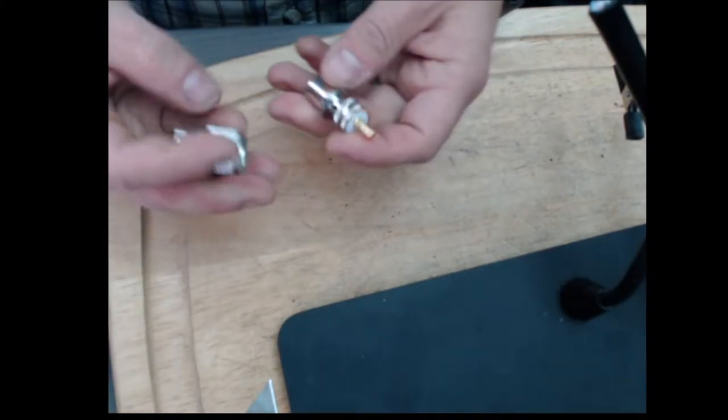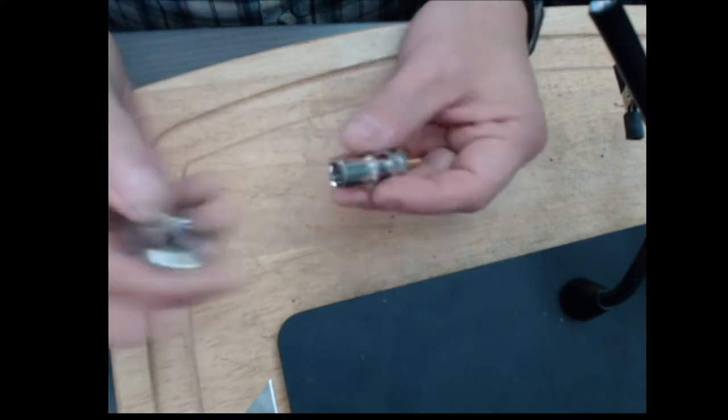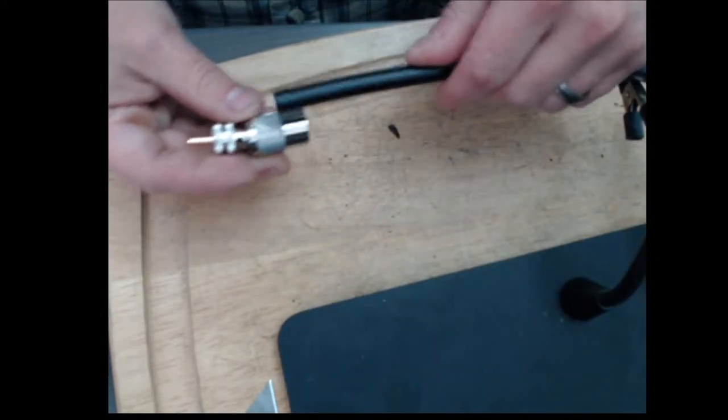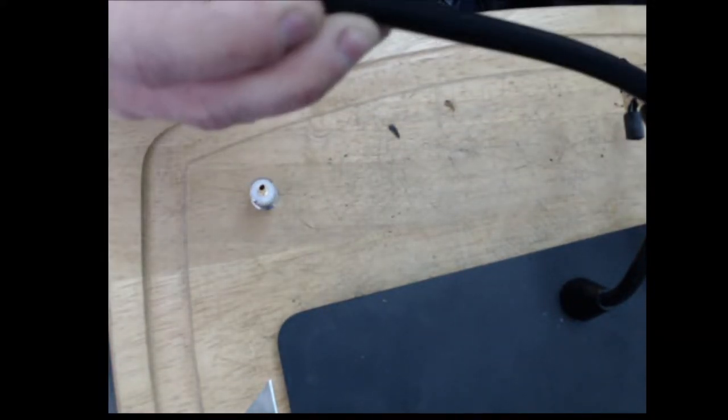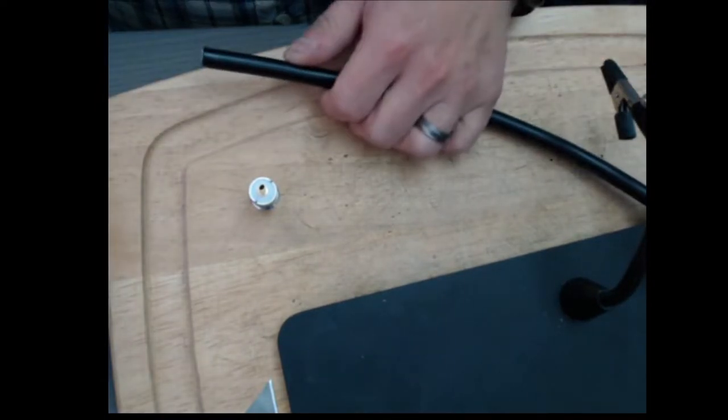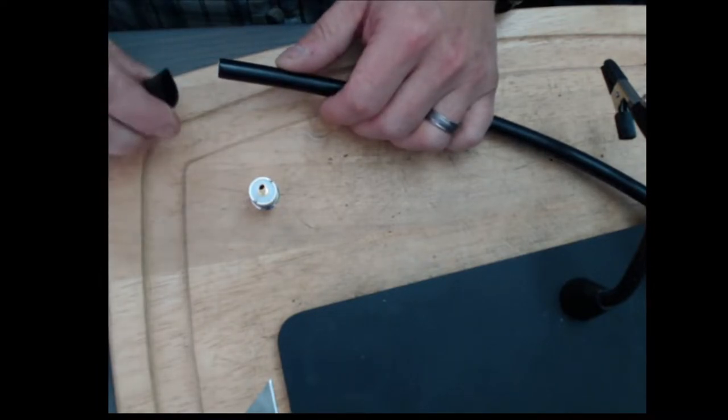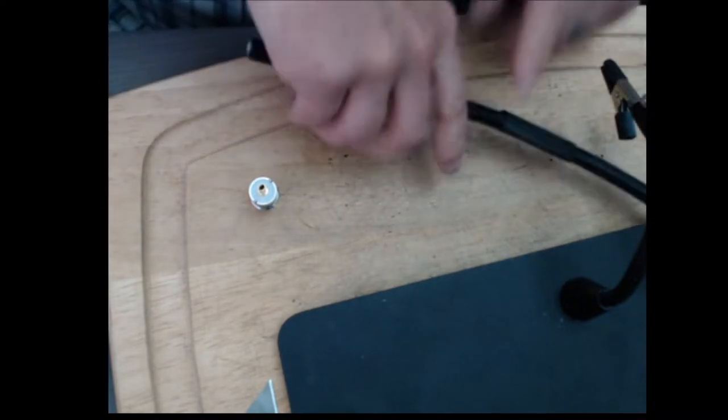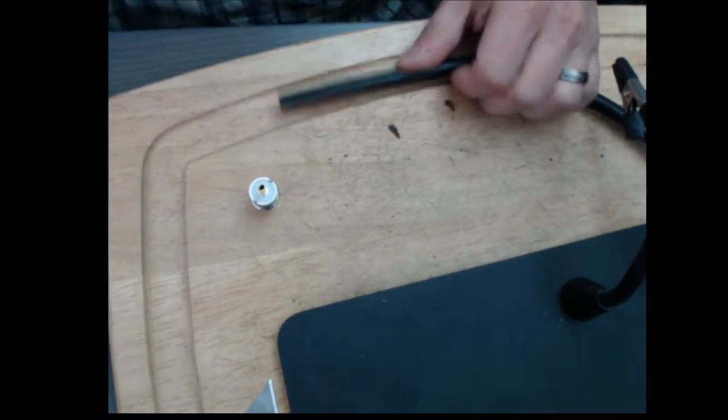So first thing you do is make sure you take your connector apart here. You're going to want to take this end - it can only screw on one way - so unscrew that and it's going to sit on the cable like this. So we need to make sure that we slide that guy down the cable. And then I also do heat shrink tubing as well on all these connections. I like the stuff that has the glue on the inside to create a weather-tight seal on it. So slide that down too. Make sure you do that.